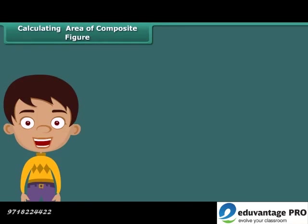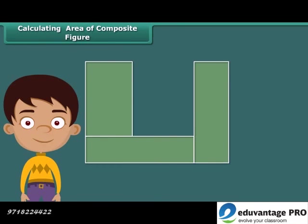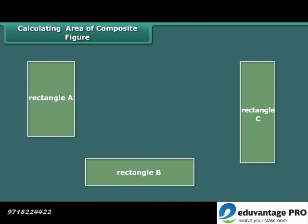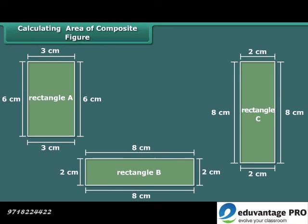Now let us calculate the area of a shape that is made up of multiple rectangles. First, break the composite figure into individual rectangles. Calculate the area of each rectangle. Then sum up the areas of all the rectangles to find the area of the composite figure.